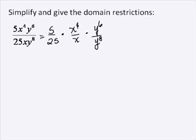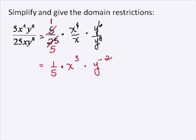If we first look at the number, 5 over 25, that 5 can be divided by 5 and we get a 1, and 25 divided by 5 gives us 5. x to the fourth over x to the third, if we subtract exponents, we get x to the third. And y to the sixth divided by y to the eighth, if we subtract exponents, we get y to the negative 2.